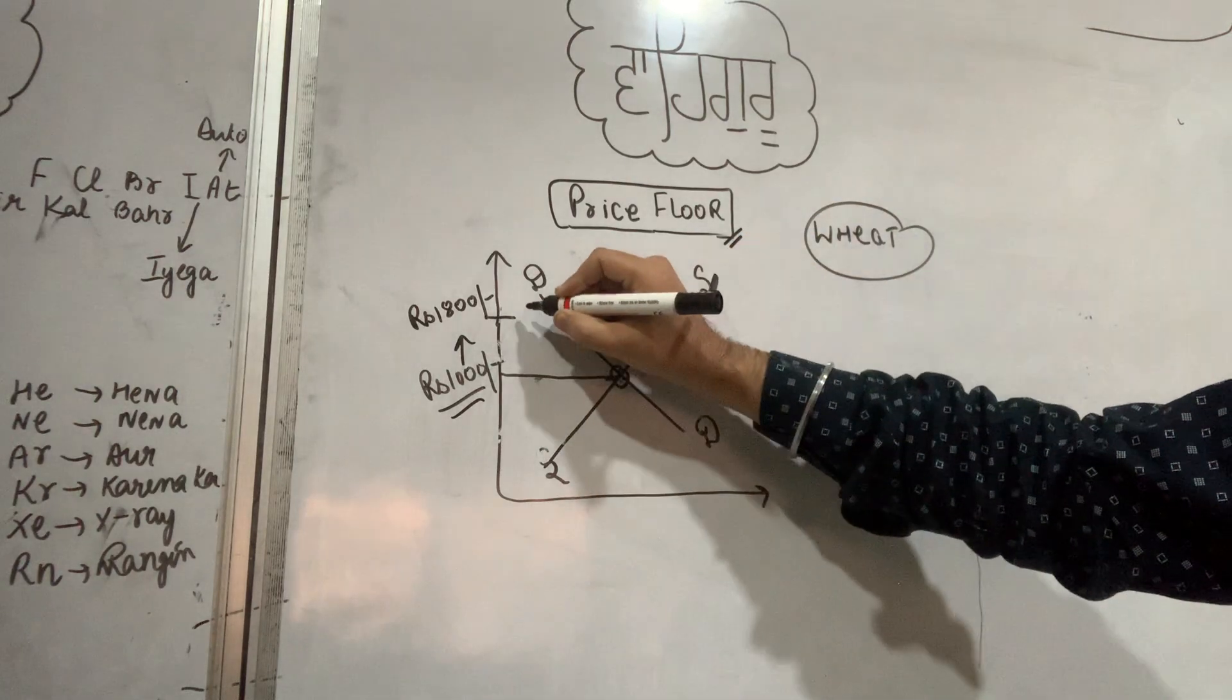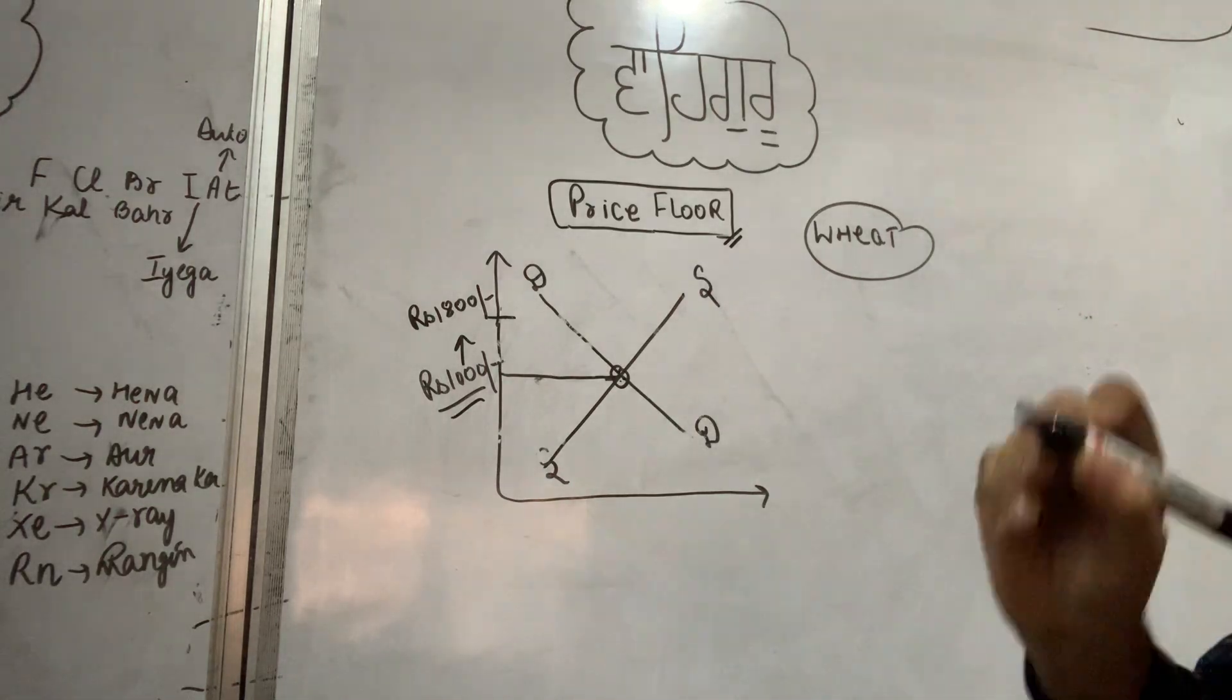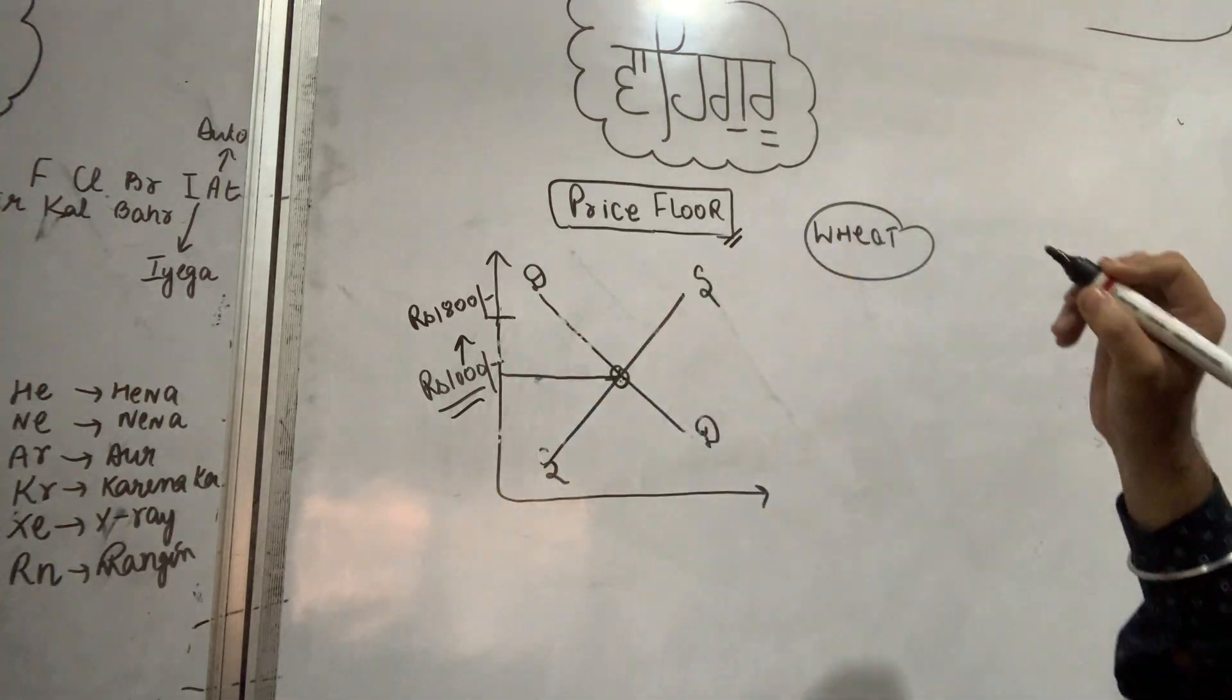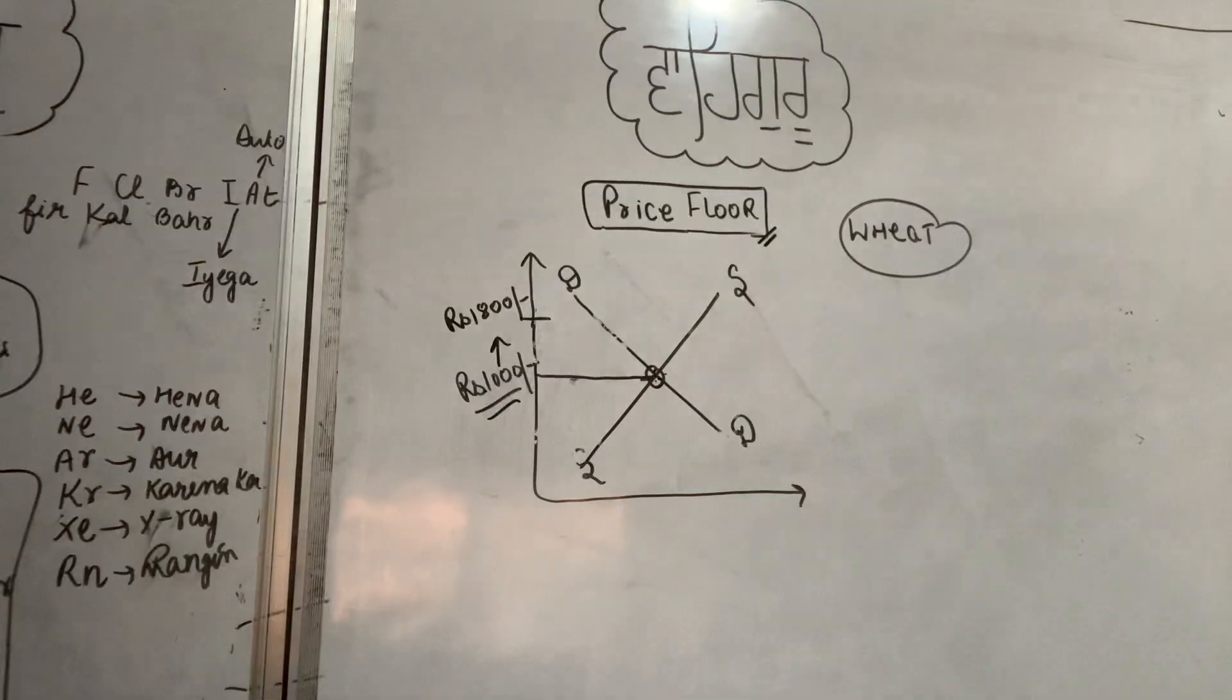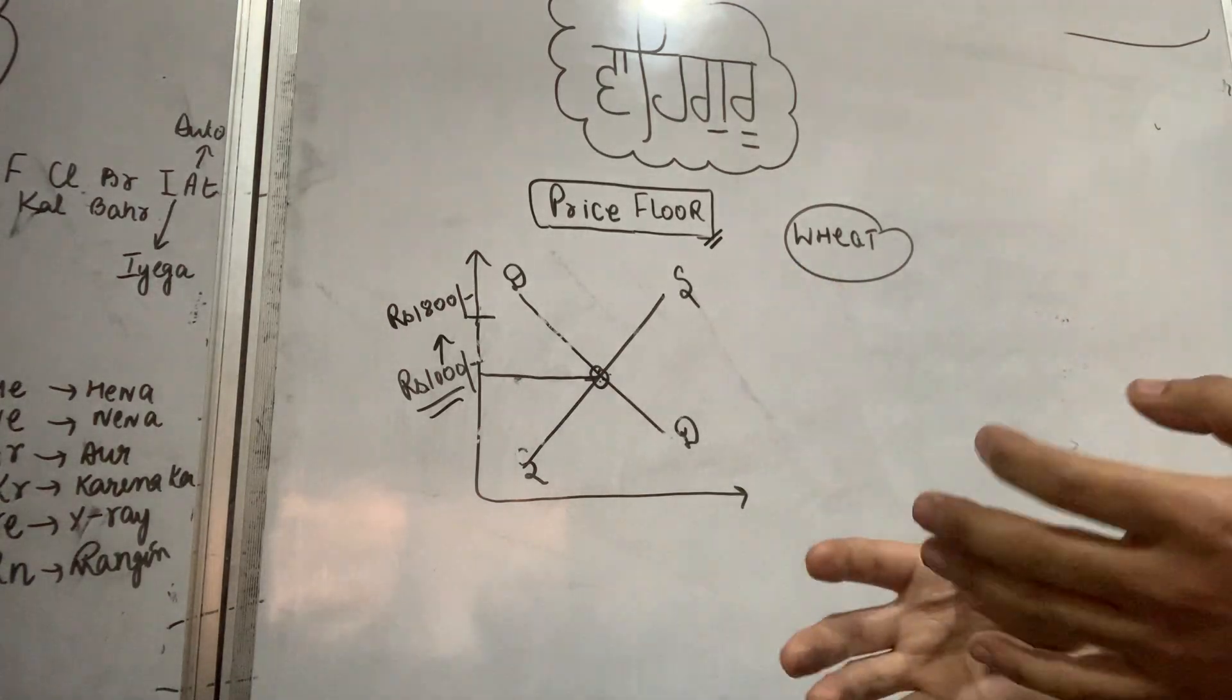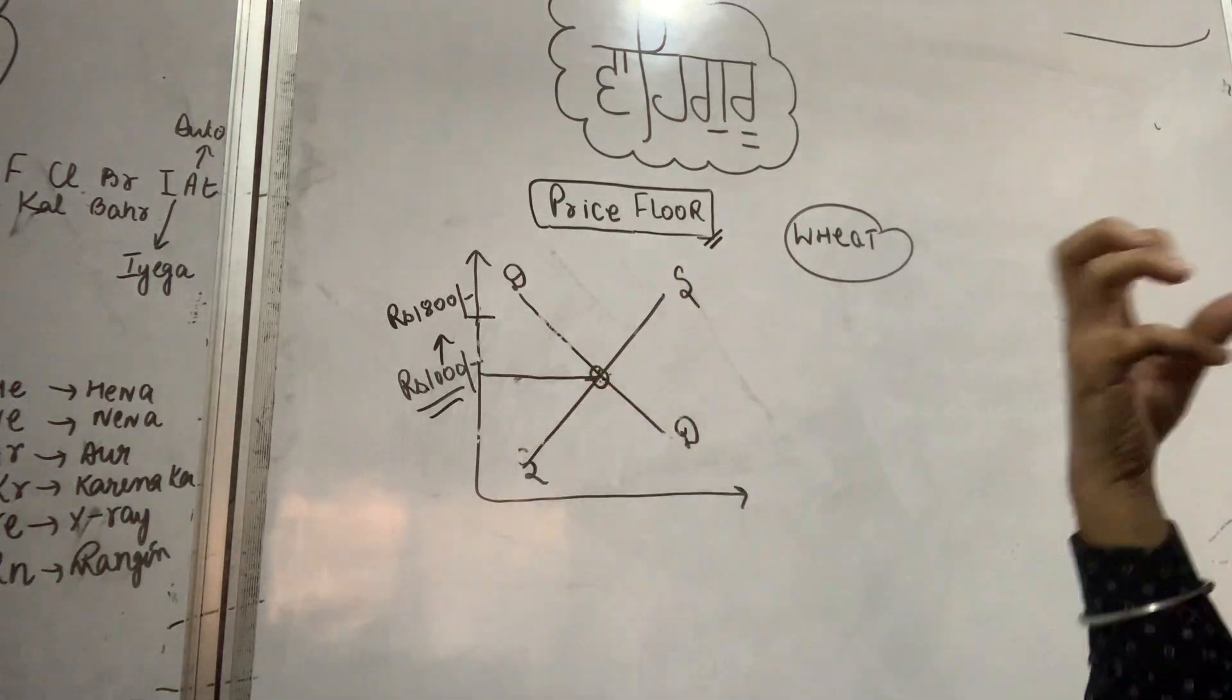When the government sets a minimum price through MSP, this is called price floor. Now, for agricultural products, the equilibrium price tends to be very low. The question is why does agricultural product price floor exist, and basically how does this work? We need to determine the reasons and solutions.